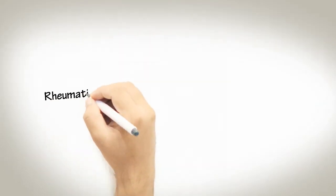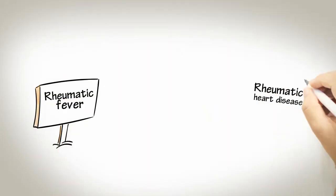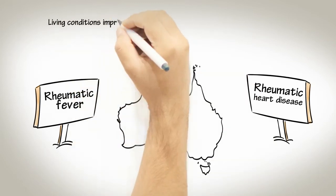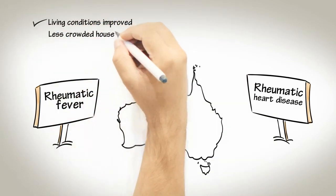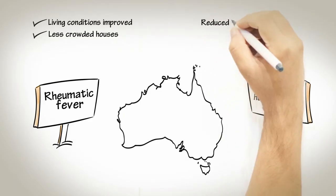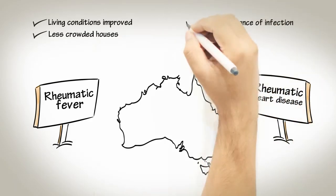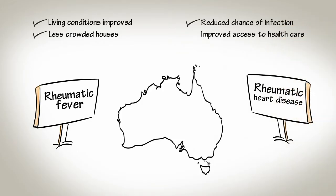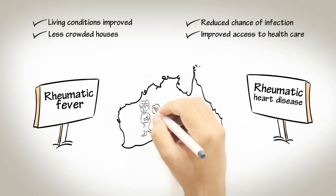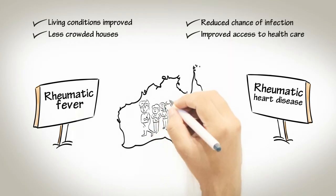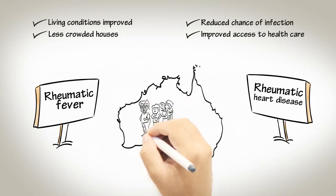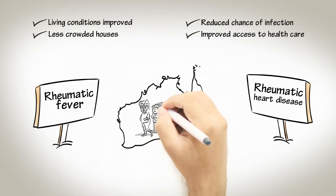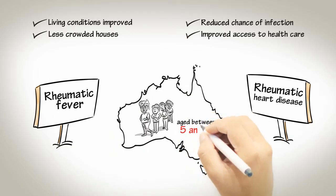Rheumatic fever and rheumatic heart disease used to be common in most areas of Australia, but as living conditions improved, houses became less crowded, so the chance of strep A being passed between people was reduced. As access to healthcare improved, it's all but disappeared from most of Australia. It is mostly seen now in Aboriginal, Torres Strait Islander and Pacific Islander populations. Children aged between 5 and 14 years are most at risk for a first episode of acute rheumatic fever.